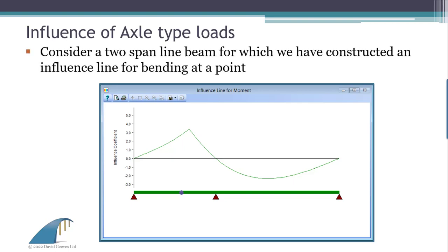For example, let's consider a two-span line beam where an influence line has been constructed for bending at the purple dot, as we did previously.